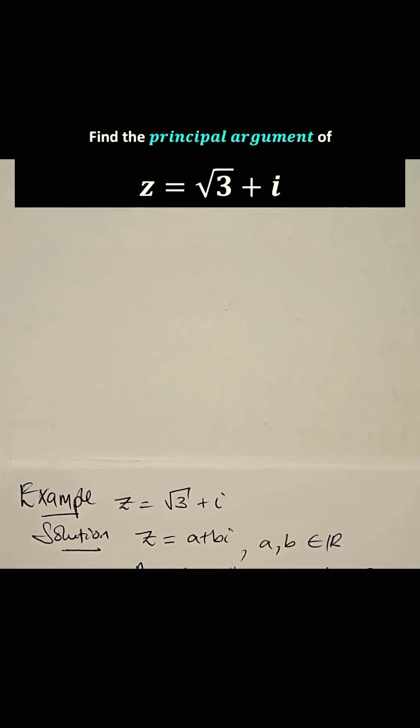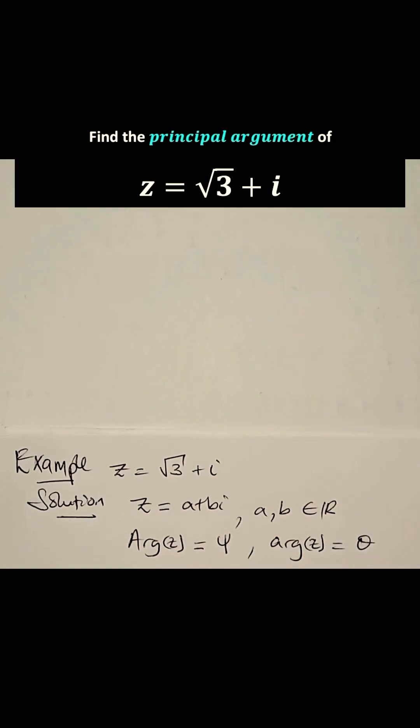Now, let's represent the argument of Z as phi, and the principal argument of Z as theta. Remember, a complex number can have as many arguments as possible, but only one principal argument.